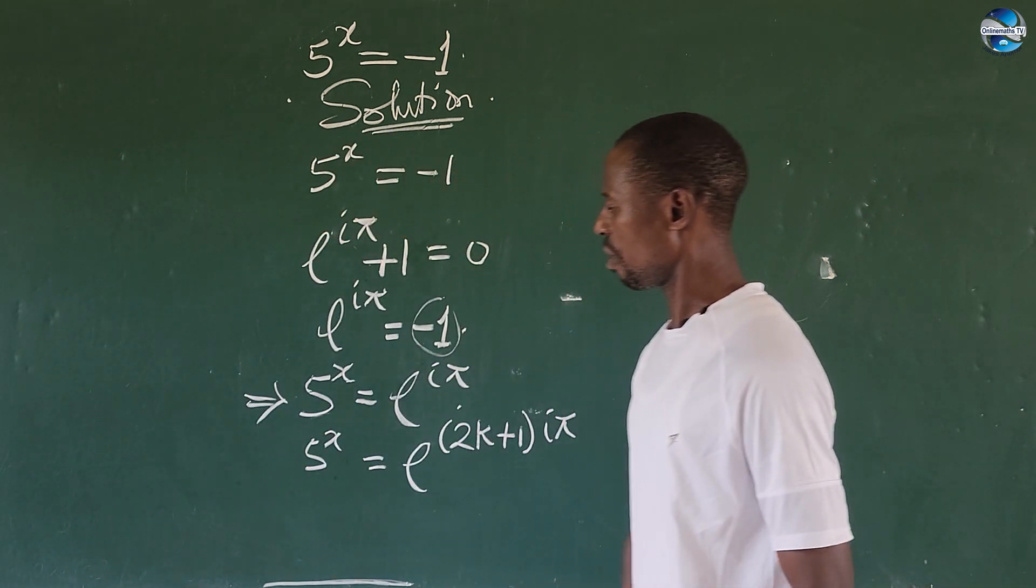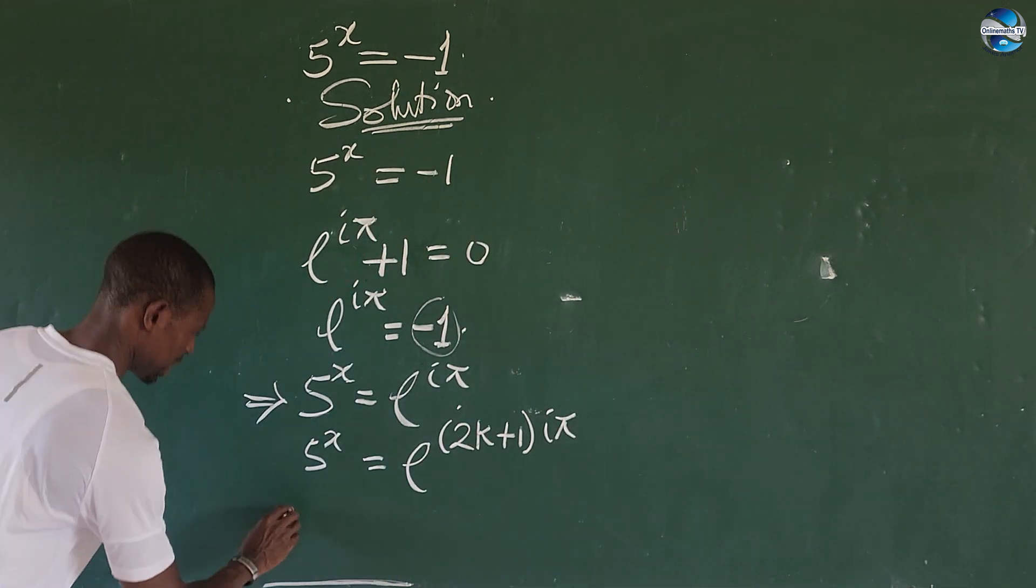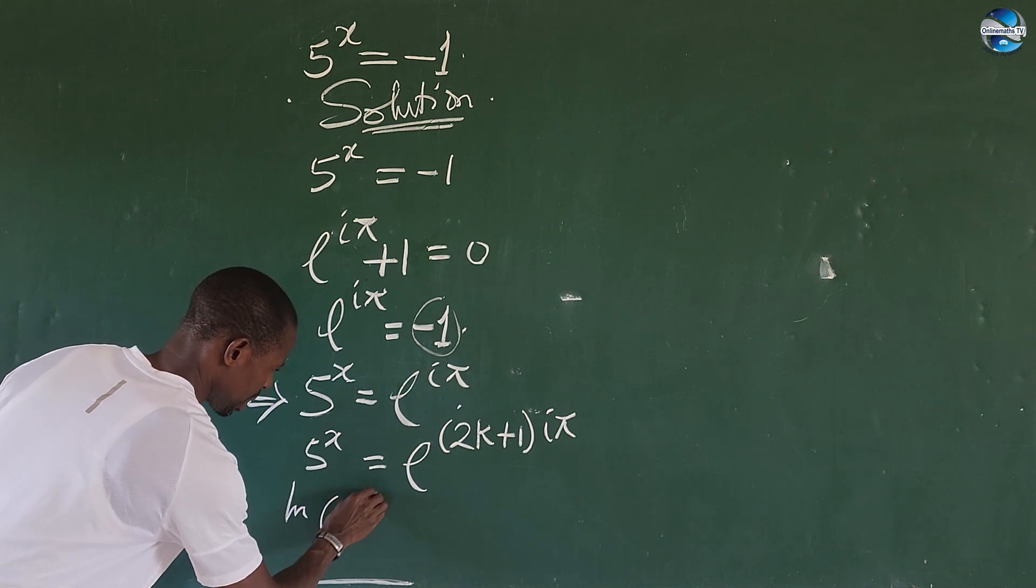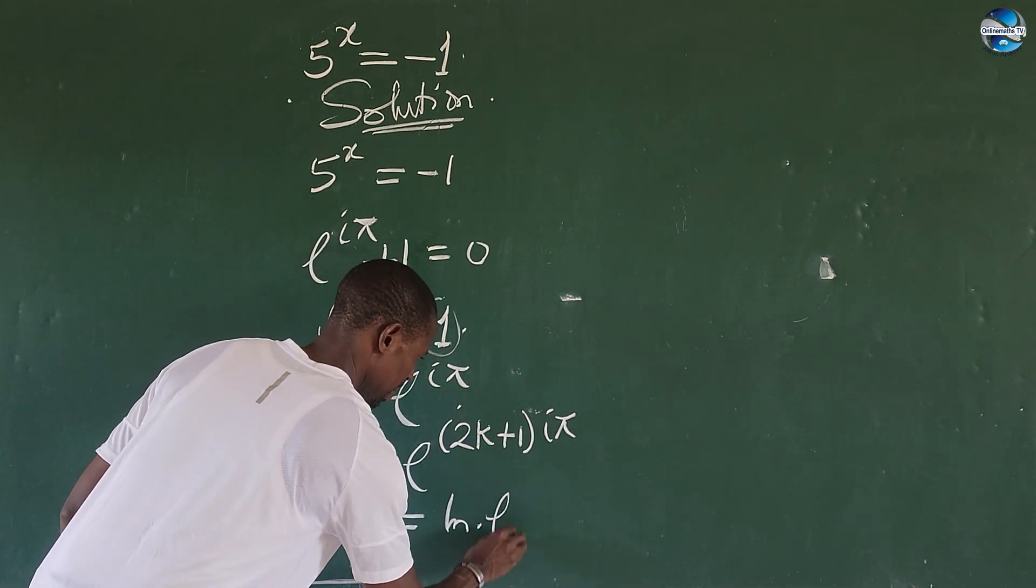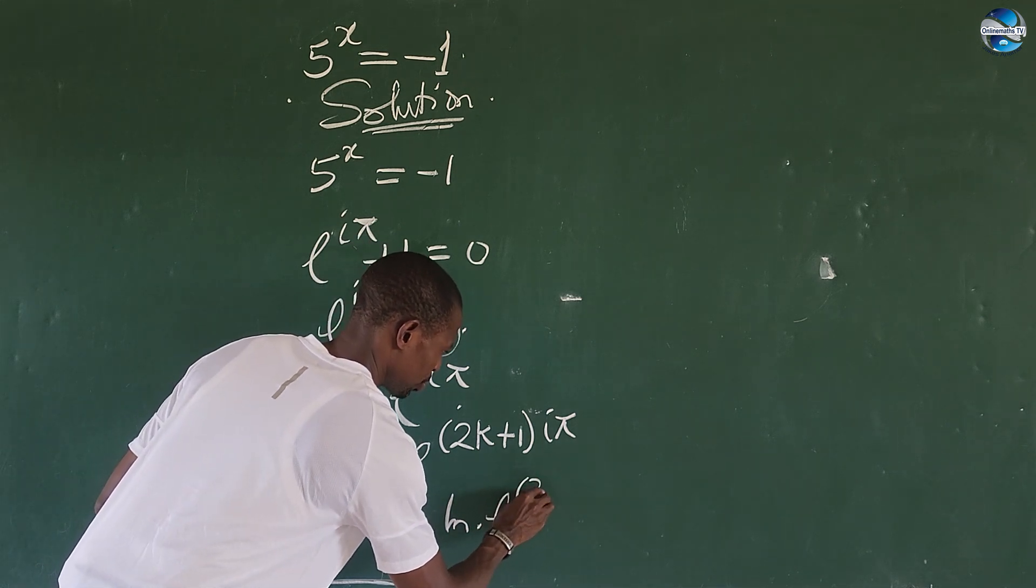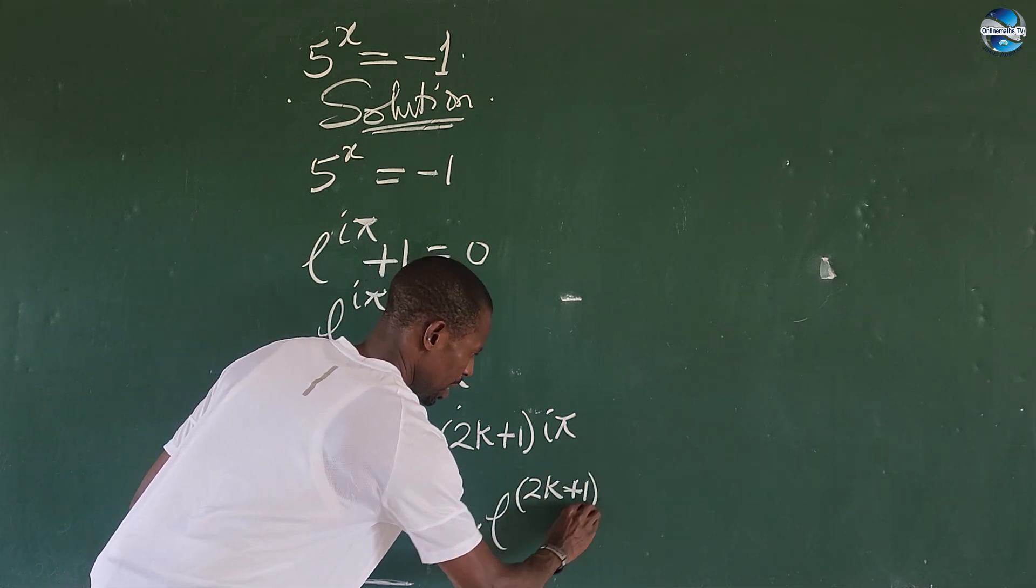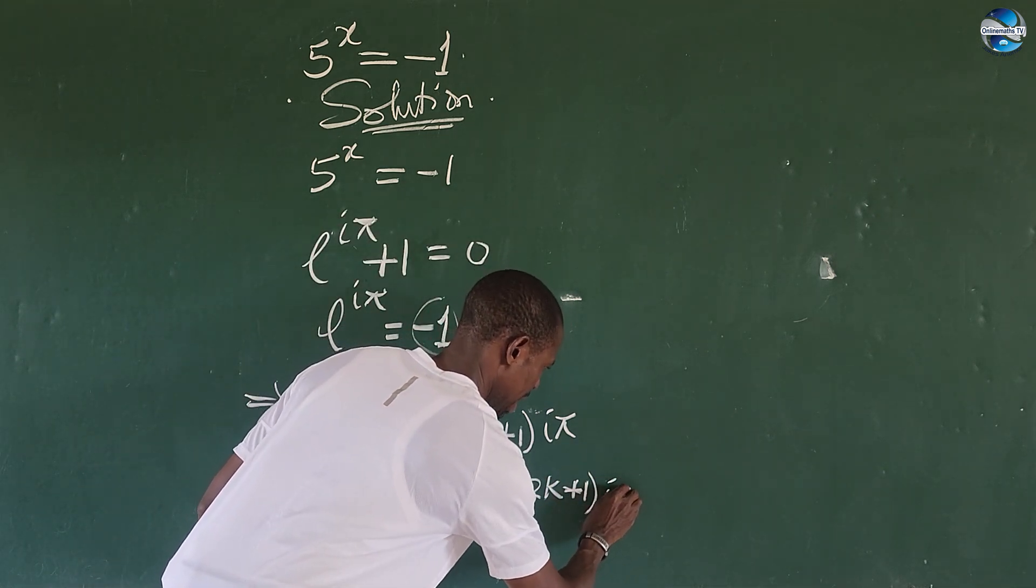Now we're looking for our x here. From here, we link both sides of the equation. So this is going to give us here, ln of 5 to the power of x, this is equal to the ln times e to the power of 2k plus 1. Then it is times i pi.